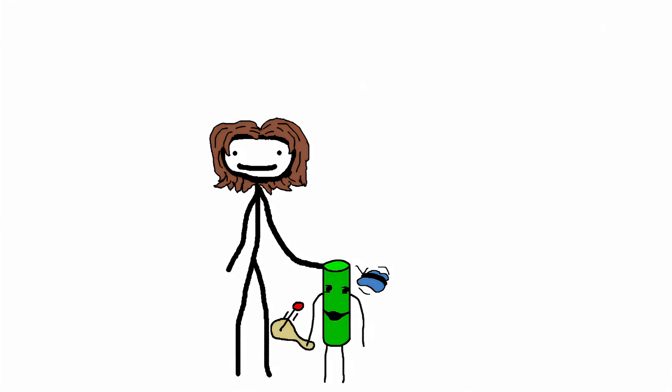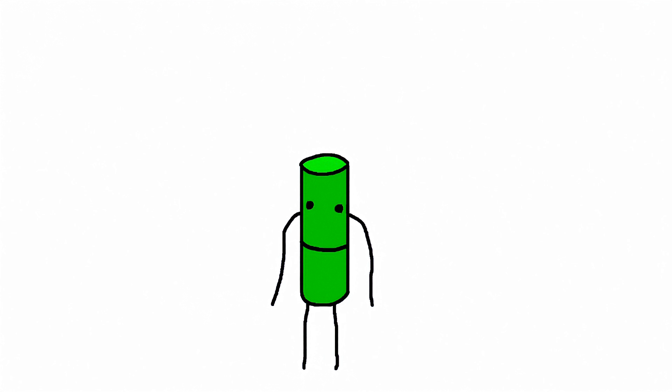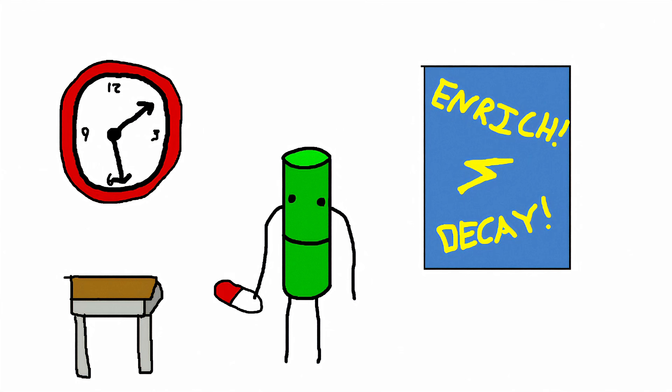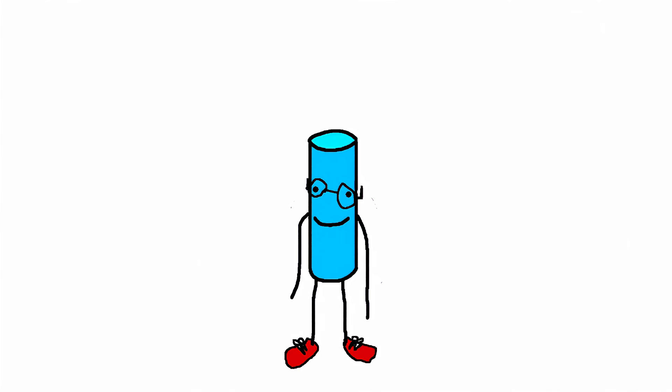Uranium's kind of like that kid with ADHD, right? You got him in the building, but you still got to give him his own little room and a couple Ritalin before he starts doing anything productive. That's expensive. Thorium, on the other hand, look at him. He's got his sneakers laced, glasses on. He's ready to go. No enrichment needed.